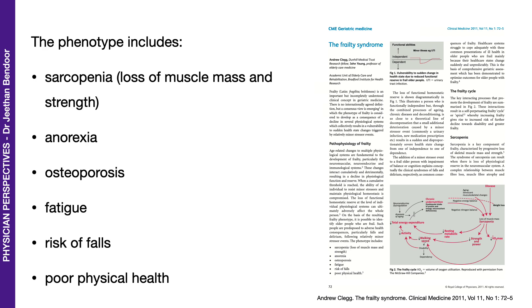The phenotype of frailty includes sarcopenia — that is, loss of muscle mass and muscle strength — anorexia, osteoporosis, fatigue, risk of falls, and poor physical health.